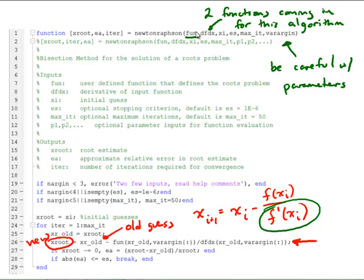You might have parameters with the first function itself that formulates the roots problem, and you might also have parameters associated with df dx. You just need to be careful to keep all of that consistent.